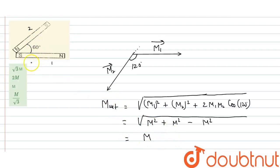So net magnetic moment of this combination is M. I hope you have understood this explanation. Thank you.